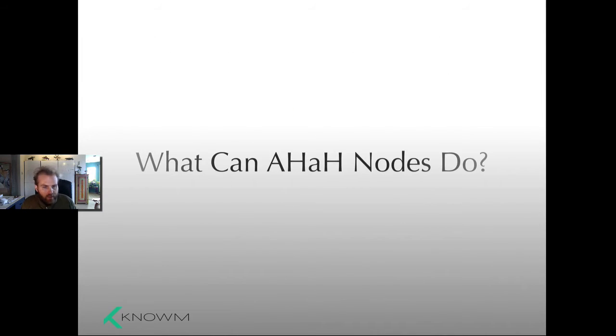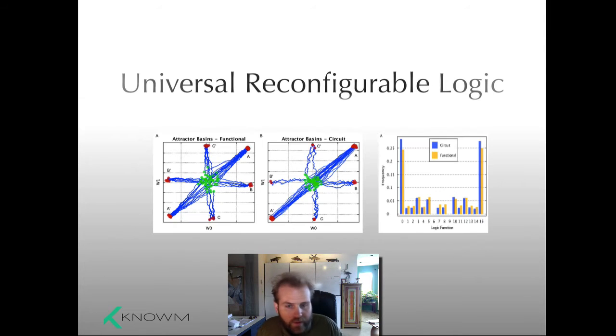Very briefly, what can AHA nodes do? Well, I mentioned before that we can do logic. Now, the unsupervised attractor states of AHA nodes are logic functions. More than that, they're universal logic functions. This means that we can acquire any logic function from the sets of logic functions that are available in these attractor states. Now, if this is confusing to you, don't worry.